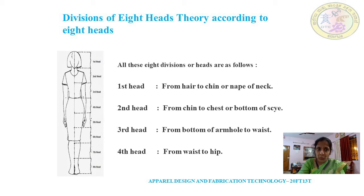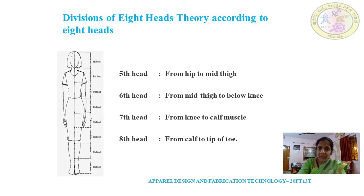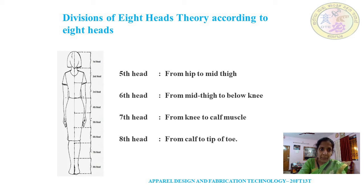The fourth head is from waistline to the hip line. The fifth head is from hip line till the mid thigh. The middle part of the thigh is called the mid thigh. The sixth head is from mid thigh to below knee. This is the mid thigh area — from there till just below the knee, approximately 5 to 6 centimeters below the knee. We consider this the sixth head.